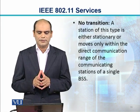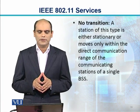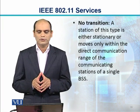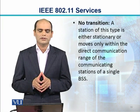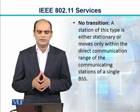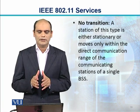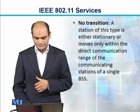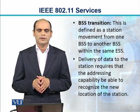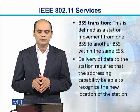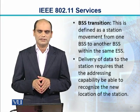The first type is no transition. A station of this type is either stationary or moves only within the direct communication range of the communicating stations of a single BSS. The second type is BSS transition, defined as a station movement from one BSS to another BSS within the same ESS. The delivery of data to the station requires that the addressing capability be able to recognize the new location of the station.